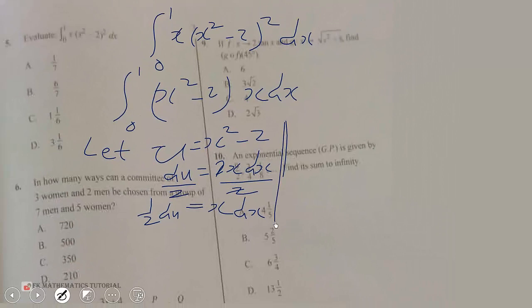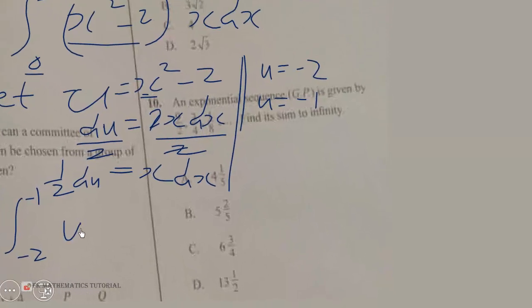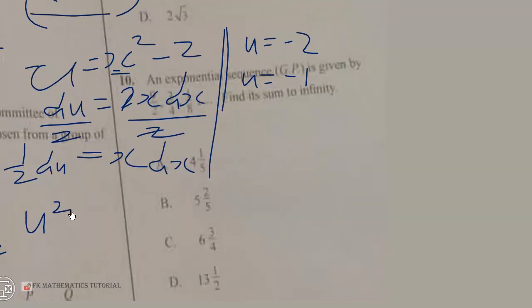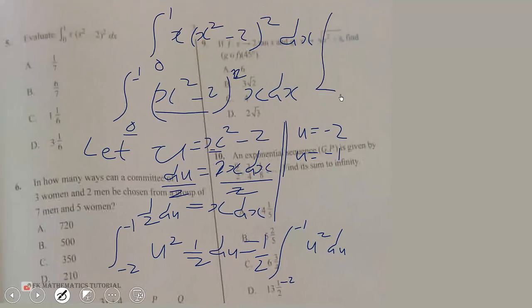When x equals 0, u equals negative 2; when x equals 1, u equals negative 1. So u moves from negative 2 to negative 1. Substituting, x dx becomes 1 over 2 du, so the integral becomes 1 over 2 times the integral from negative 2 to negative 1 of u squared du. Integrating gives u cubed over 3.